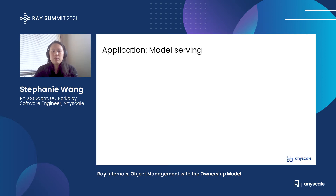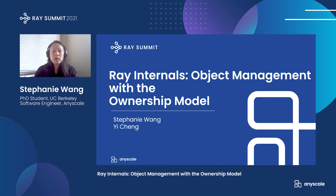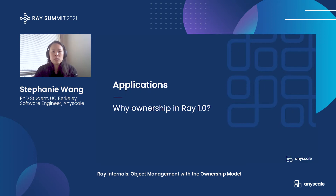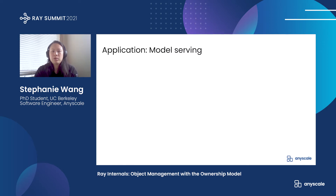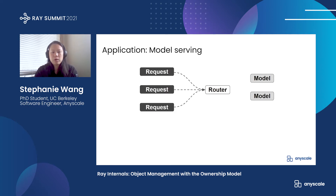I want to give some background for why we wanted to introduce ownership in Ray. The two main reasons were system stability and performance. To show why these are important, let's take a look at model serving as an example use case. We can implement this in Ray by using multiple actors as model replicas and a router actor that routes requests to the models.